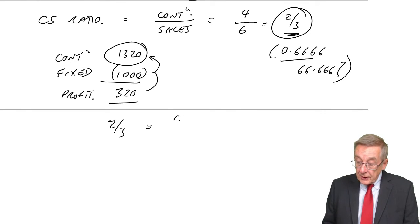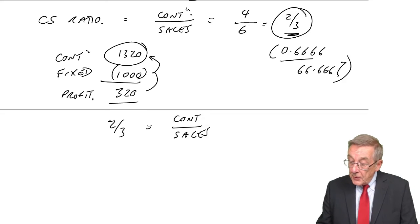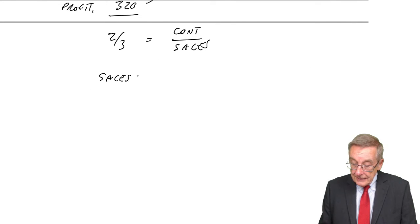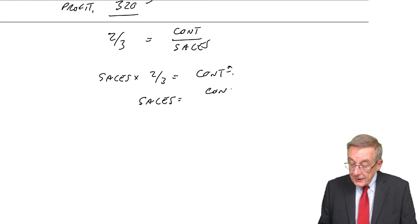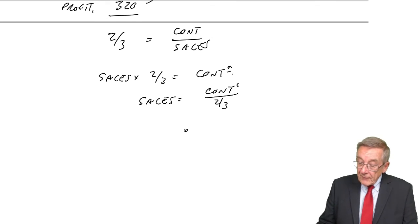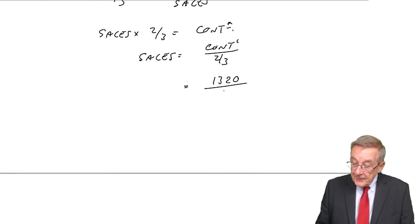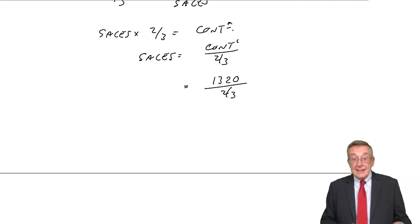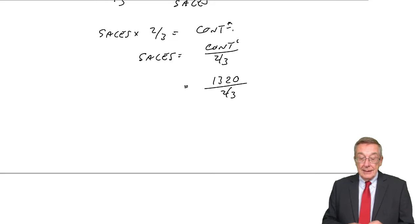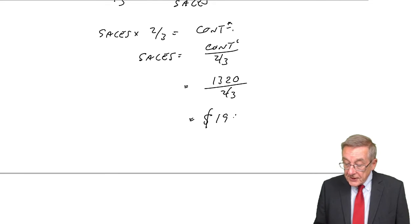Two-thirds, remember, is equal to the contribution divided by the sales. Multiply both sides by the sales, it's equal to the contribution. Or, the sales, if I divide both sides by two-thirds, is the contribution over two-thirds. And what's it here? Well, the contribution, we need $13,200. If you divide that by two-thirds, or 0.6666666, what do we get? 1980. The revenue must be 1980.